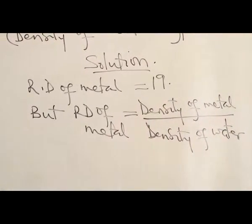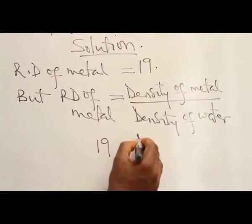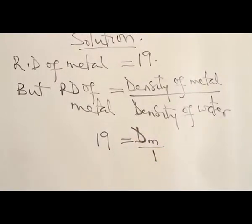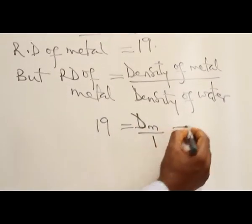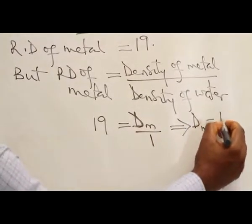So 19 is equal to density of the metal, represented by subscript m, over 1, the density of water. This implies that the density of the metal is 19 grams per centimeter cubed.